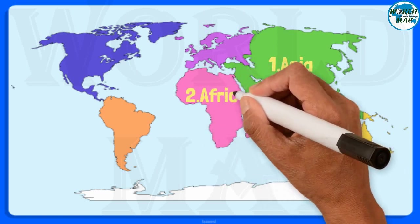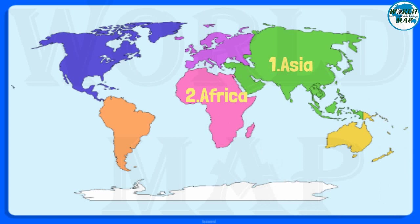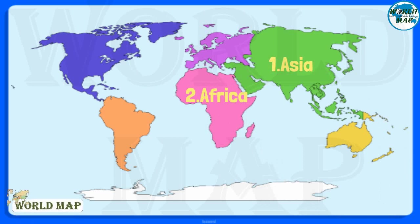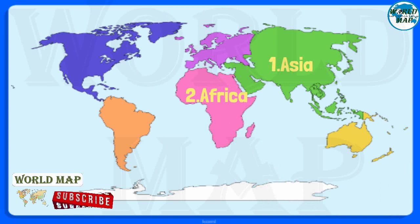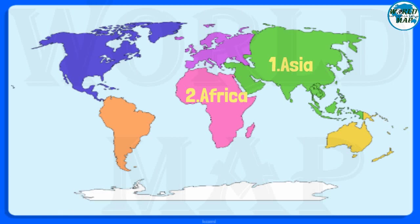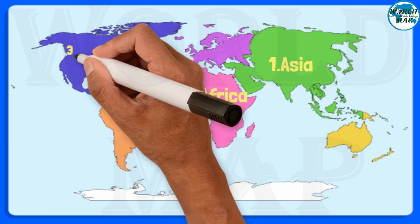Number 2. Africa. It is the second largest continent in the world after Asia, both by area and population. It comprises 54 countries and over 16% of the world's population.